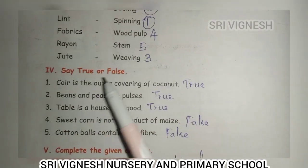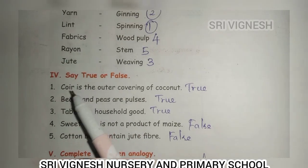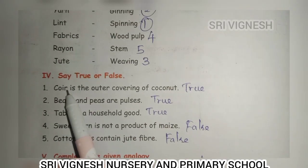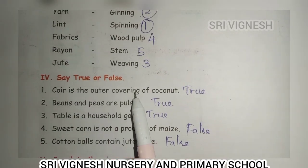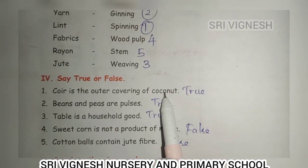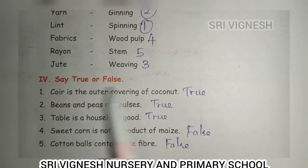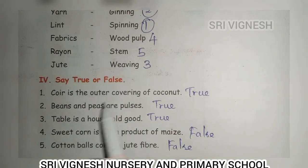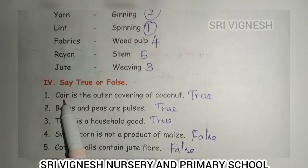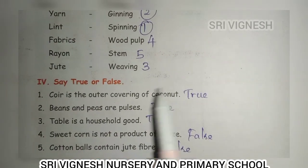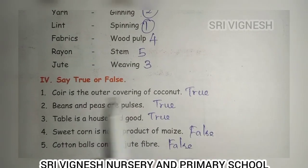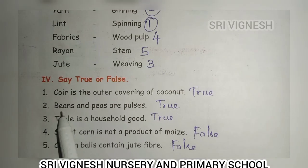Say true or false. Coir is the outer covering of coconut. Coir is the outer covering of coconut — this is a coir, this is a tree. So, true.